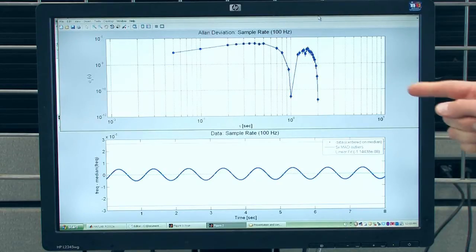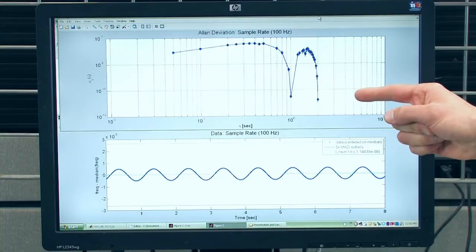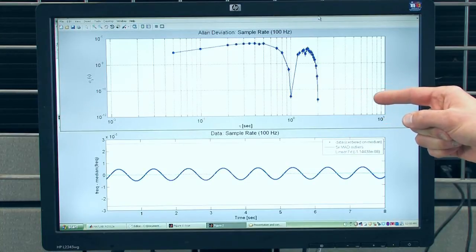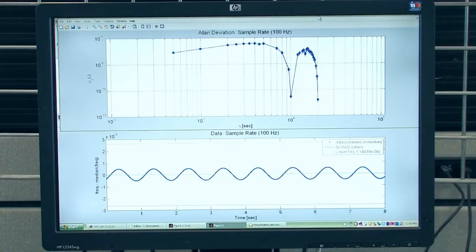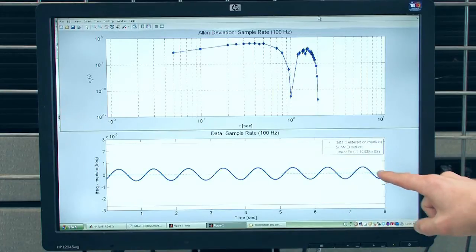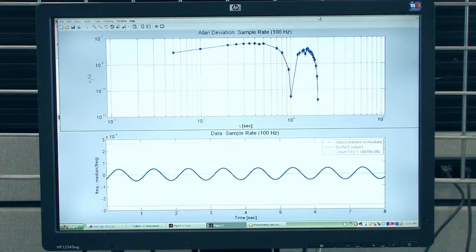So here we can see a strong dip at tau value one second and a strong dip at tau value two seconds which are the integer multiples of the one hertz period. And also on the bottom we can clearly see our sine wave noise.